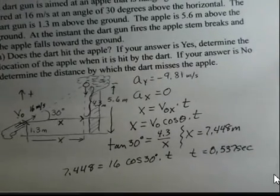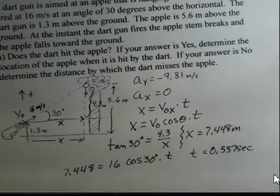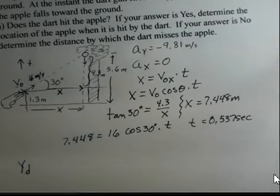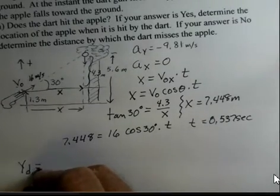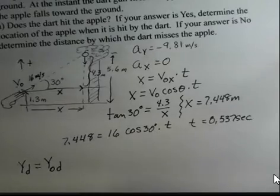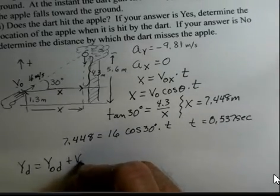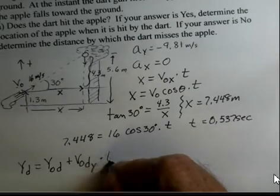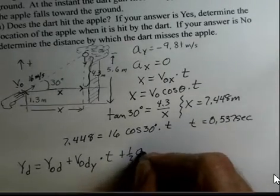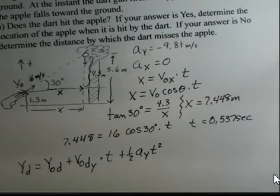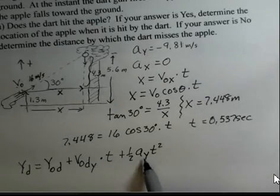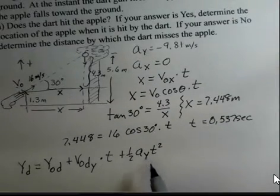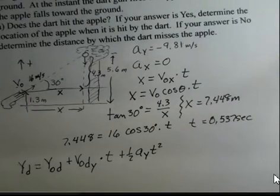now we need to talk about the dart in the Y direction, the Y motion, and also the apple in the Y motion. So in the Y, the final Y position of the dart—the subscript d stands for dart—equals the initial position of the dart plus the Y component of the velocity for the dart as it starts, multiplied by the time, plus one half a_y t squared. So that's for the dart. I didn't have to do that for the acceleration. Both the apple and the dart have experienced minus 9.81 meters per second squared.